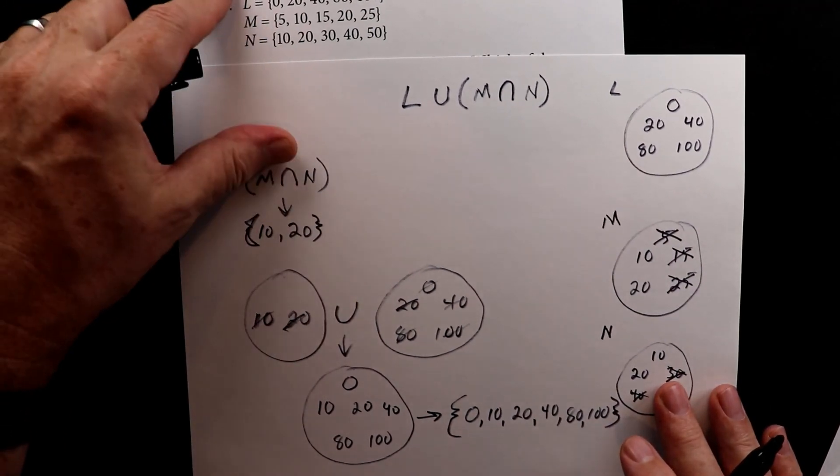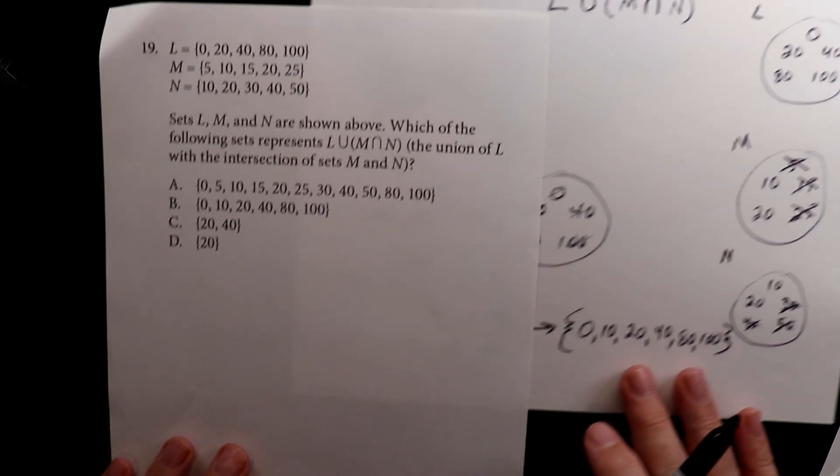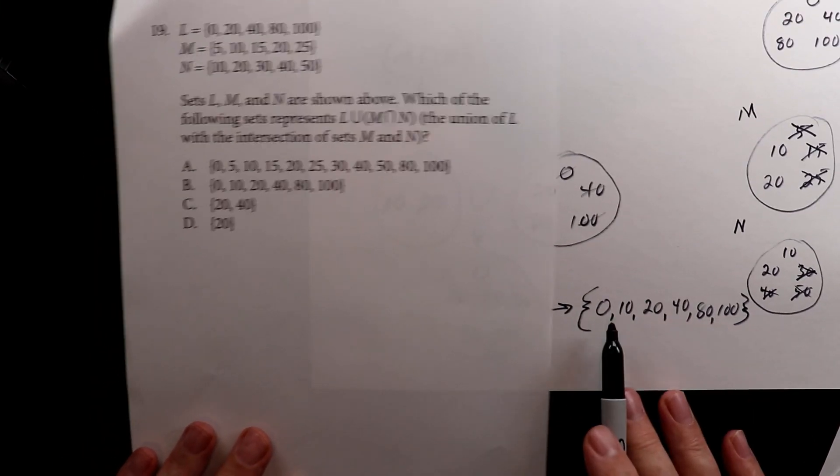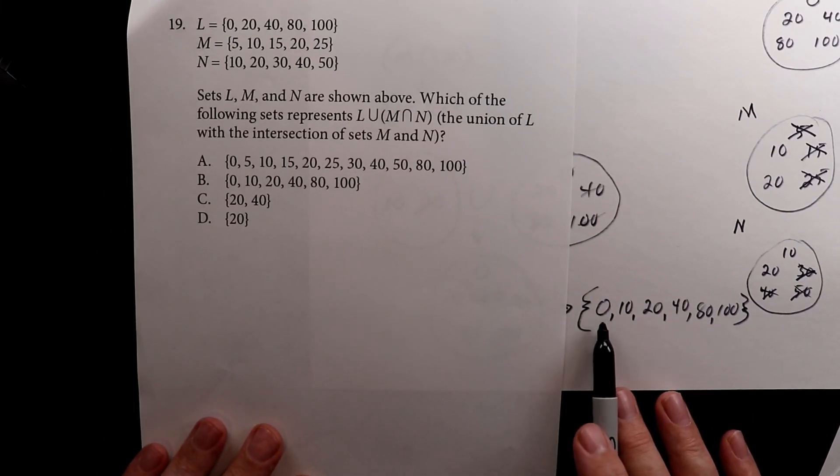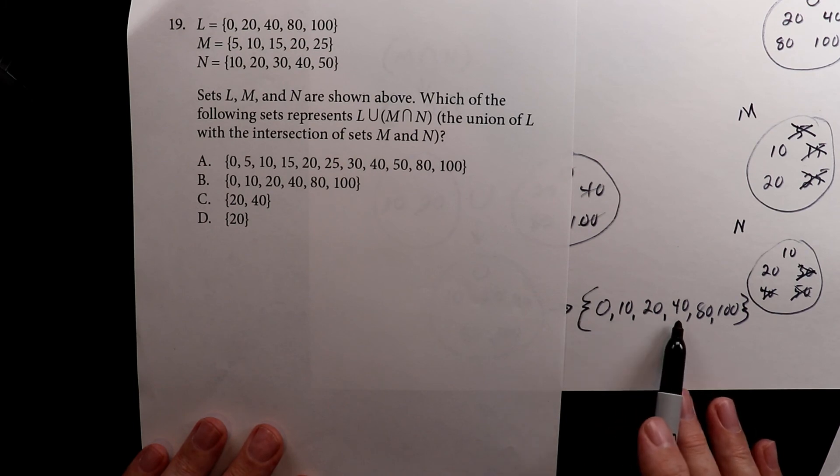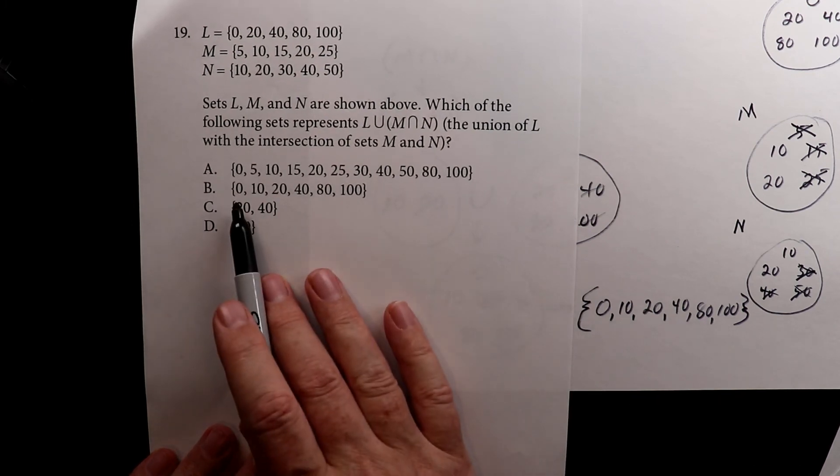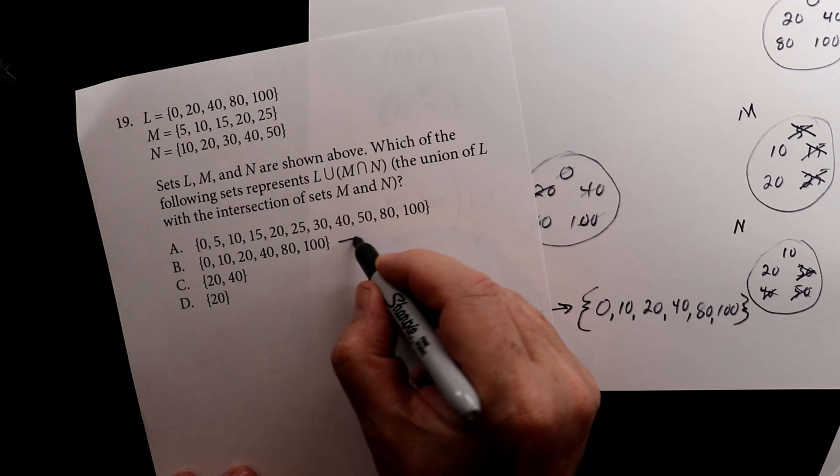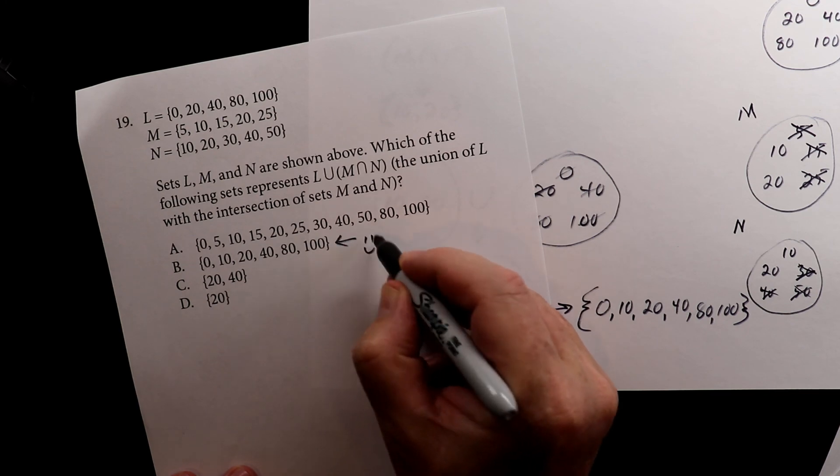So that's the union of L with the intersection of M and N. So I look at my answers, and I try to find this one, which is 0, 10, 20, 40, 80, and 100. And I see it right there, letter B. That's it.